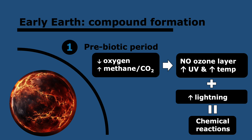In this period, the atmosphere had a lot less oxygen and a lot more methane and CO₂. Having no oxygen means there was no ozone layer, since ozone is formed from oxygen. As we know, the ozone layer protects us from UV, so there would have been a lot more UV, temperatures would have been higher, and it's also thought there was a lot more lightning. The higher UV and higher amounts of lightning would have caused chemical reactions to occur.